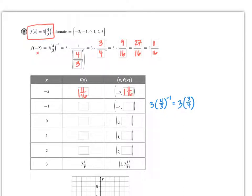16 goes into 27 once with 11 left over, so when we plug in -2, we get 1 and 11/16. If we plug in -1, that's 3 times (4/3) to the -1, which equals 3 times 3/4. That is 9/4, which is 2 and a fourth. Next one, 3 times (4/3) to the zero. Anything to the zero power equals 1, so 3 times 1, which is 3.